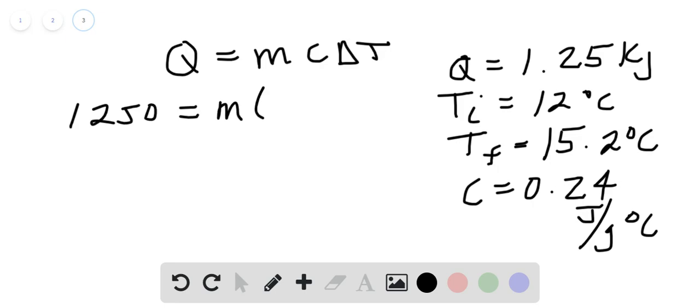Our specific heat is 0.24. I'll have to go down here. Final temperature is 15.2 minus 12. So we get 1,250 on the left still. We'll combine the 0.24 and our change in temperature.